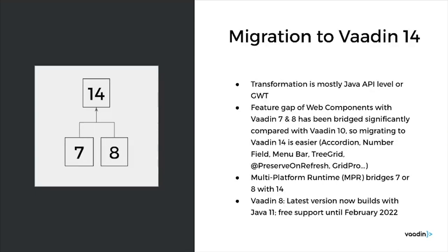If you're still on Vaadin 7 or 8, you're actually in good company. Many organizations we're talking to still have significant workloads on the older GWT generation of the Vaadin framework. Vaadin 14 has added many features to help make the migration from 7 and 8 much easier — components like Tree Grid, Menu Bar, Accordion, and Number Field; features like Preserve on Refresh annotation and generic drag-and-drop; and pro components like Grid Pro. MPR is still available as a shortcut to co-exist Vaadin 7 or 8 with Vaadin 14 so that you can run a phased migration.